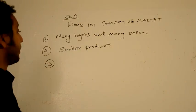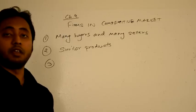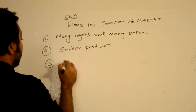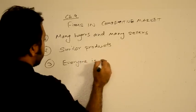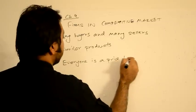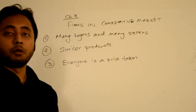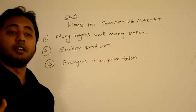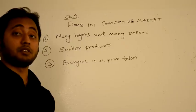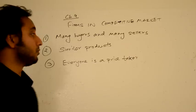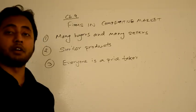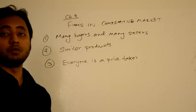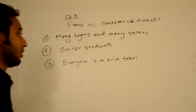The third characteristic is that everyone in this market — the buyer and the seller — everyone is a price taker. That basically means that neither the seller nor the buyer can actually affect the market price. There are so many sellers that if one producer wants to increase its production, it doesn't really have an impact on the price. So everyone takes the price from the market; one individual seller or buyer cannot really change it.